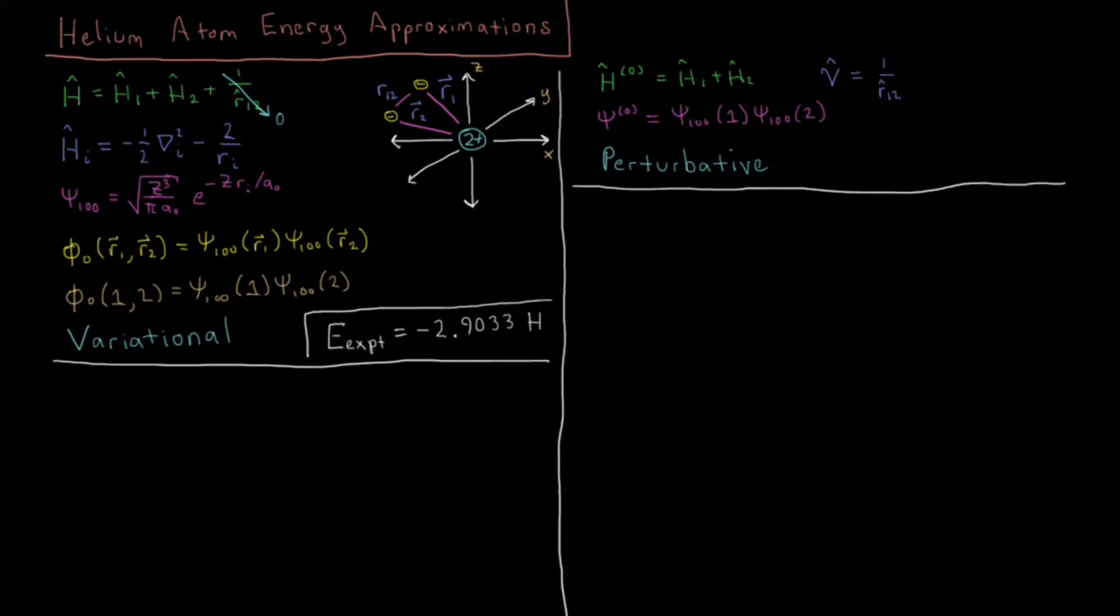So we're going to have the energy in terms of this variational parameter z. So if we have the E of z, the charge, which is our variational parameter, that energy, since this is a normalized wave function, we're not going to worry about the denominator for the variational method.